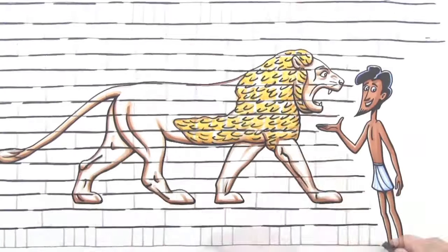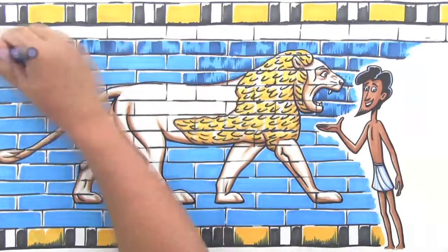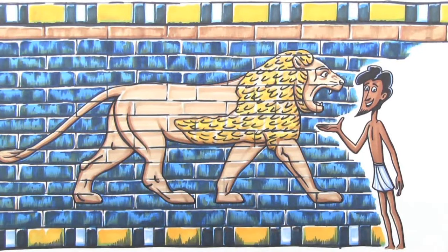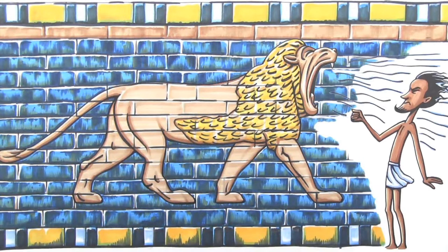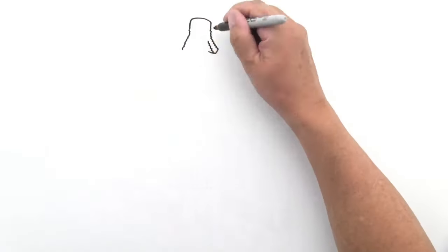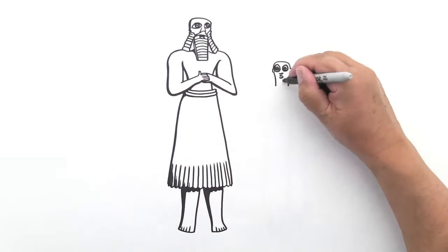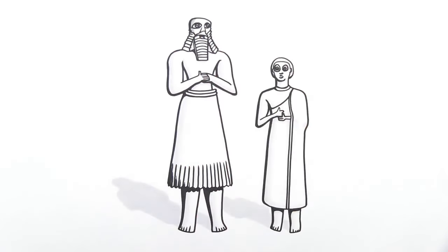They lived close to the natural world, and like this lion that decorated the walls of the Ishtar Gate, their animal art was pretty realistic. Their human art? Not so realistic. Both Mesopotamian and Egyptian artists stylized the human body.